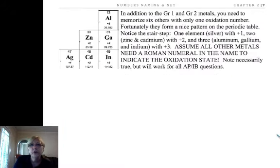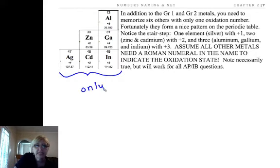Now another quick memorization tool are this cluster of metals that have only one oxidation state. Now group one is always plus one, group two is always plus two, and a handy way to memorize these is to see this pattern on the periodic table.